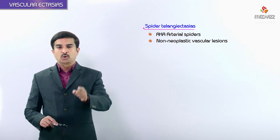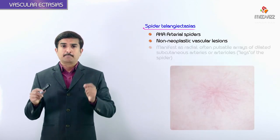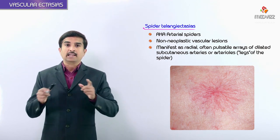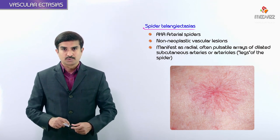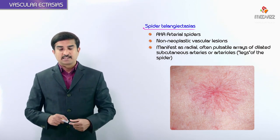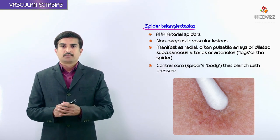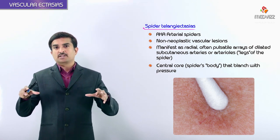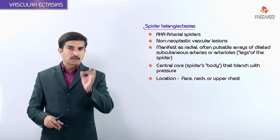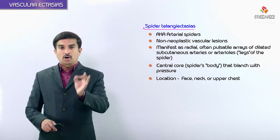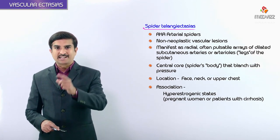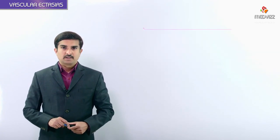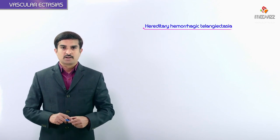Spider telangiectasias, also called arterial spiders, are non-neoplastic vascular lesions. They manifest as radial, often pulsatile arrays of dilated subcutaneous arteries or arterioles. The legs of the spider radiate from a central core that blanches with pressure. These commonly present on the face, neck, or upper chest and are most commonly associated with hyperestrogenic states, especially in pregnant women or patients with cirrhosis.